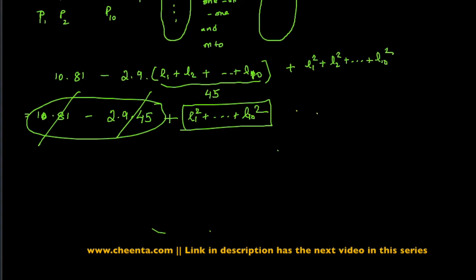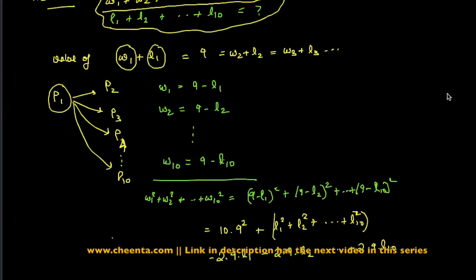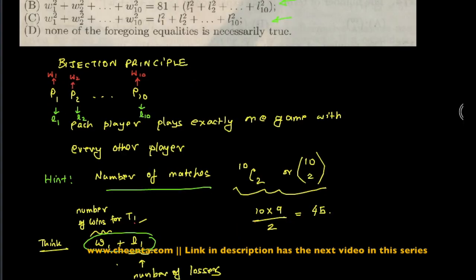So our final answer is W1 squared plus W2 squared up to W10 squared is equal to L1 squared up to L10 squared. So that's the final answer, which is basically option C in this problem.